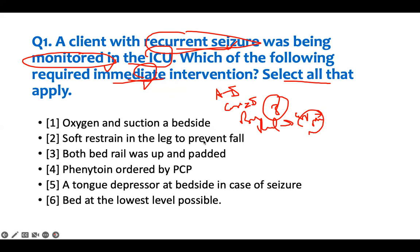You take this information and use it for each answer choice — you don't compare. I need to get ready for another seizure and protect the patient. 'Oxygen and suction at bedside' — yes, so they don't aspirate. I should have these available. Therefore, I don't need to intervene here.